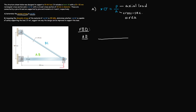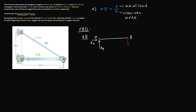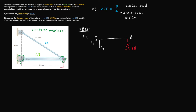Starting off, I'll draw member AB as a simple horizontal line representing the boom. At point A on the left and point B on the right we have pins, so at point A we will have reaction forces along the X and Y directions. On the right we simply have the external force of 30 kilonewtons. Members AB and BC are two-force members since forces act only on their two ends. At point B, a pin technically gives us reaction forces BY and BX just like at point A.